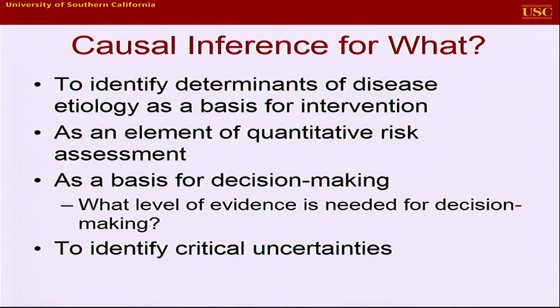This is a picture of the Department of Epidemiology at Hopkins, somewhere in the 30s — I was chair from 94 to 2008, and the faculty was much better dressed in the past. There was one woman in the faculty at the time, the first. So then we turn to causal inference for what. Traditionally in public health: to identify determinants of disease, etiology as a basis for intervention — smoking causes disease, let's do something about it. In our more contemporary context, there's quantitative risk assessment, a basis for decision making, and the question of what level of evidence is needed for decision making.